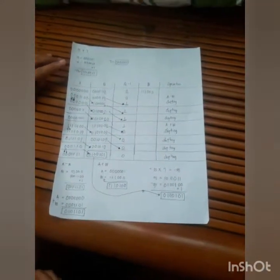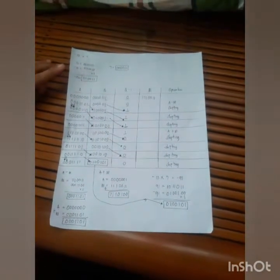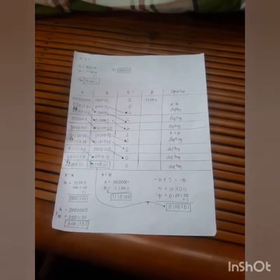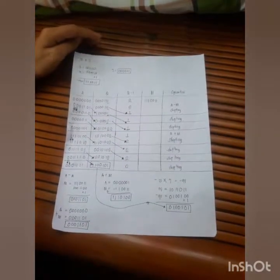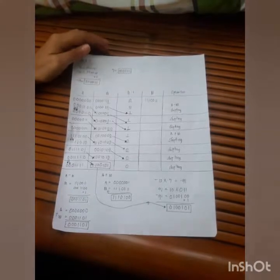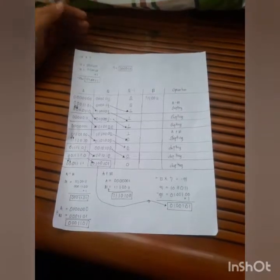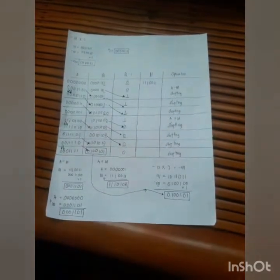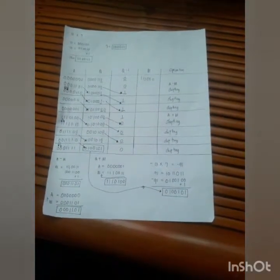The answer of negative 13 is 1110011. You will also convert the second digit into binary, which is 7 equals 0000111.